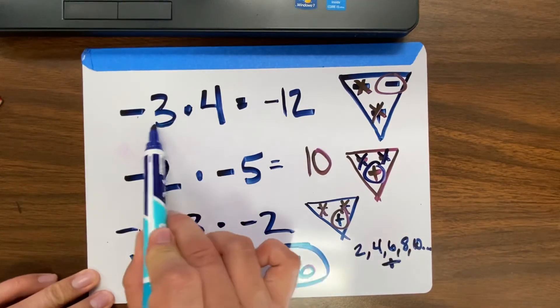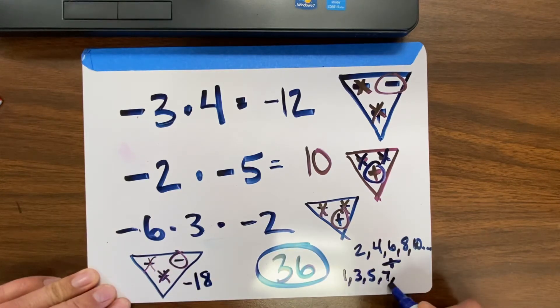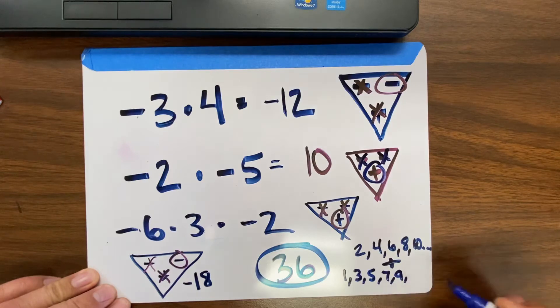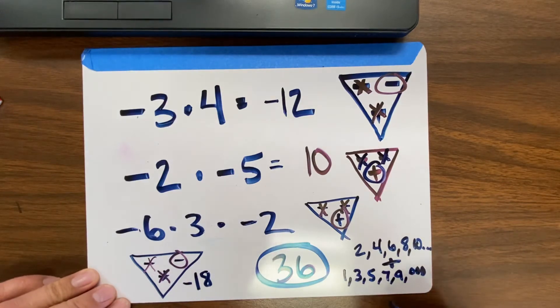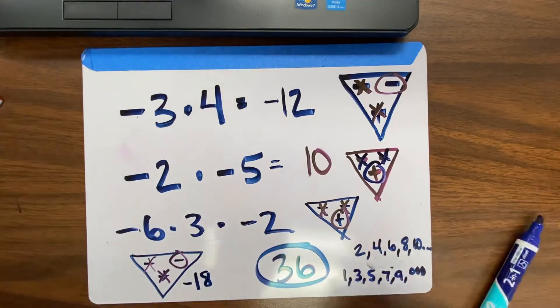Up here, there was 1, 3, 5, 7, 9, or those are called odd numbers. If there's an odd amount of negatives, then that answer will always be negative.